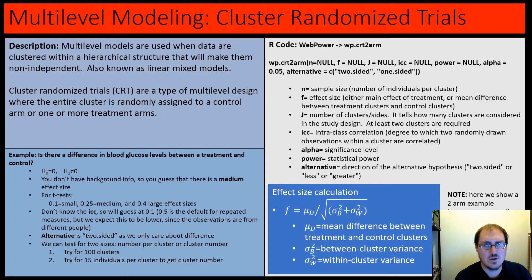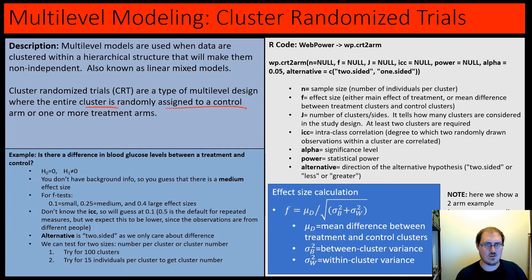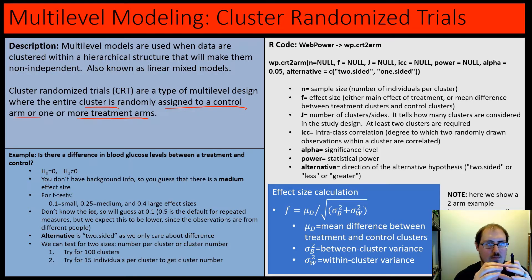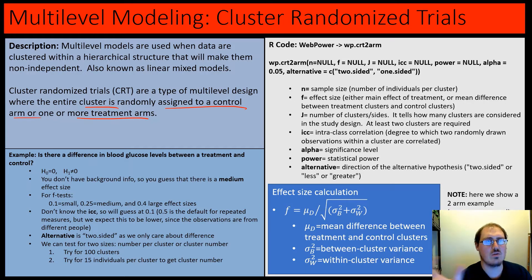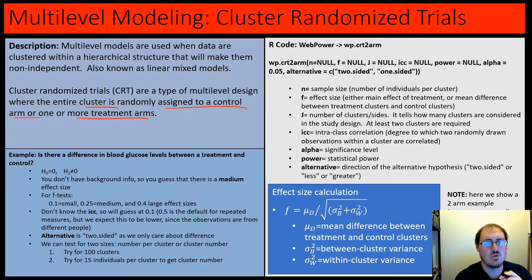These are also known as linear mixed models. When we say that they're hierarchical or non-independent, let's take a look at our cluster. Clusters are where an entire cluster is randomly assigned to a control arm or treatment arm — those clusters themselves are the hierarchical structure. A cluster might be like a school, hospital, or maybe a block in a neighborhood. Within that cluster, they're all related — for example, all the kids go to the same school — so they're not truly independent. That's what we mean by hierarchical.